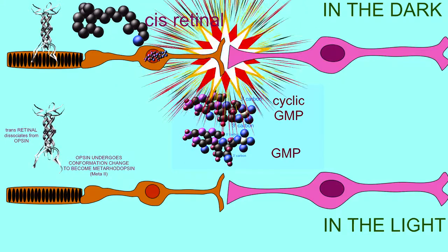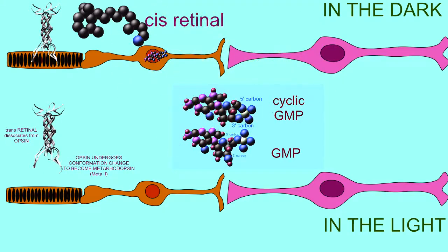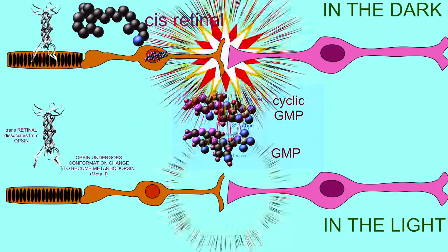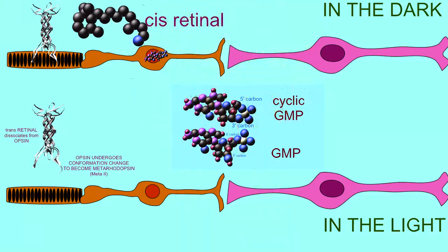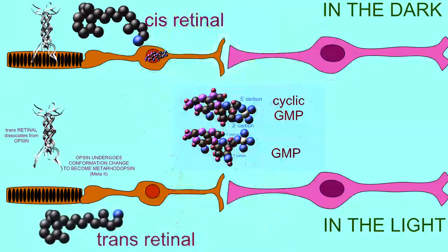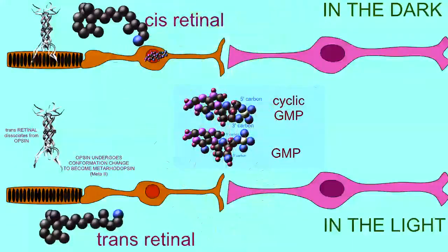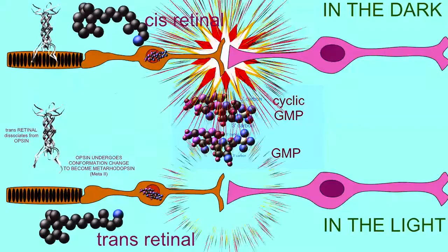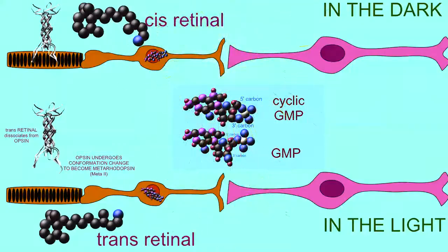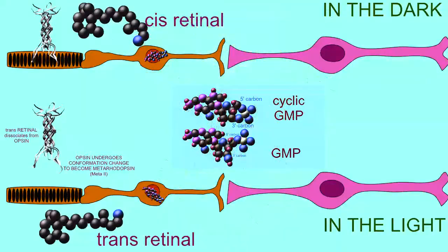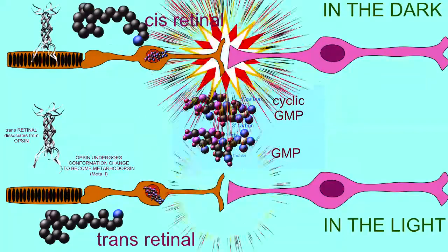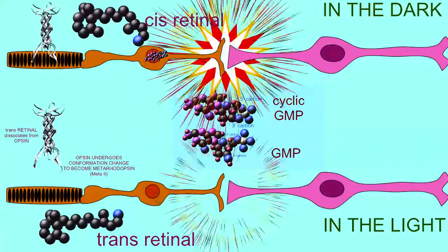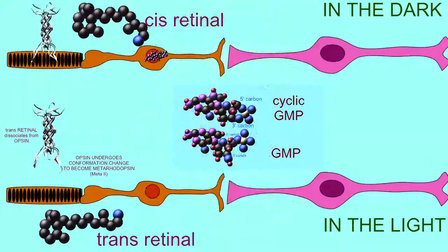When light strikes retinol, it changes its conformation to the trans form and dissociates from opsin. Opsin activates the G-protein transducin, which then decreases the concentration of cyclic GMP.